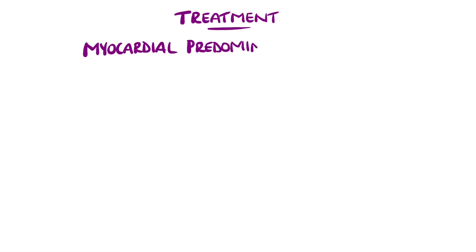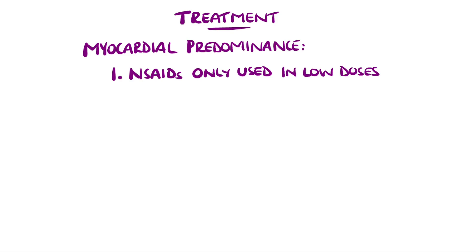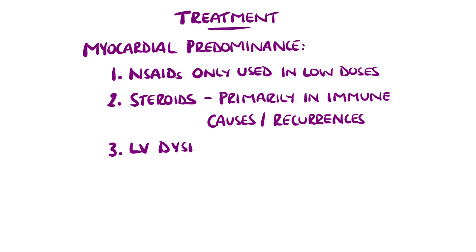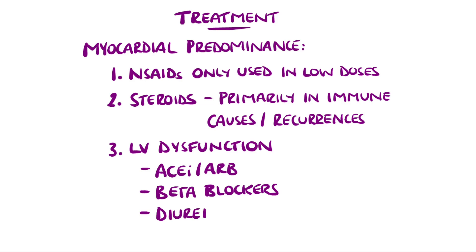In predominantly myocarditis, non-steroidal anti-inflammatories are only used in low doses as they can worsen myocardial function. Steroids may be used but are mostly reserved for immune causes or recurrent episodes, although they have been linked with an increased risk of recurrence in pericarditis. Where left ventricle function is impaired, medications similar to those in heart failure are used, such as ACE inhibitors or angiotensin receptor blockers and beta blockers, as well as diuretics.